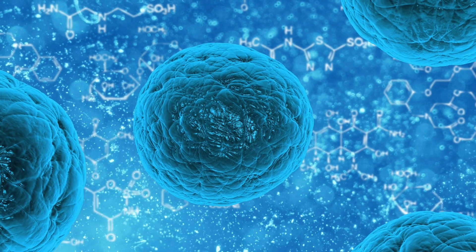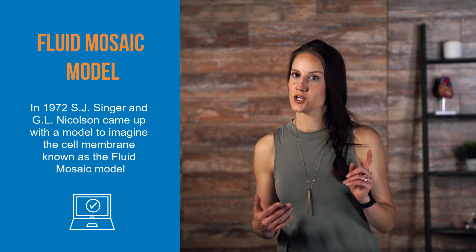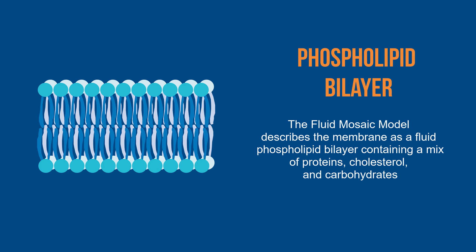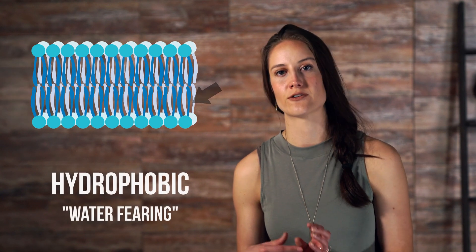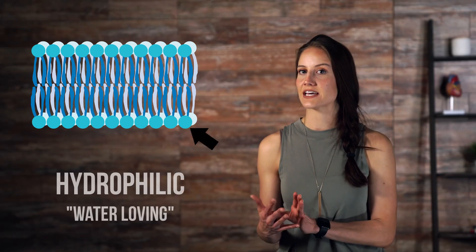There's a lot going on in the cell's membrane. In 1972, S.J. Singer and G.L. Nicholson came up with a model to imagine the cell membrane, known as the Fluid Mosaic Model. This describes the membrane as a fluid phospholipid bilayer containing a mix or mosaic of proteins, cholesterol, and carbohydrates. Phospholipids are a type of lipid with hydrophobic, or water-fearing, fatty acid tails, and a hydrophilic, or water-loving, phosphate group as their head. This combination of hydrophilic and hydrophobic regions makes them known as amphipathic.